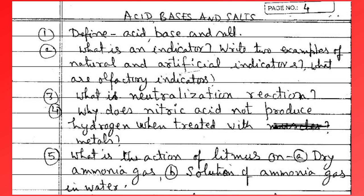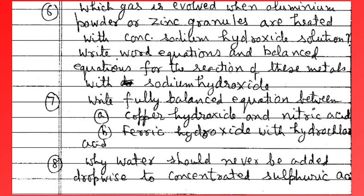Why does nitric acid not produce hydrogen when it is treated with metals? What is the reaction of dry ammonia gas and the solution of ammonia gas in water? Which gas is evolved when aluminum powder or zinc granules are heated with concentrated sodium hydroxide solution? Write the word equation and balanced equation for the reaction of this metal with sodium hydroxide. Balance the reaction between copper hydroxide and nitric acid, and ferric hydroxide with hydrochloric acid.